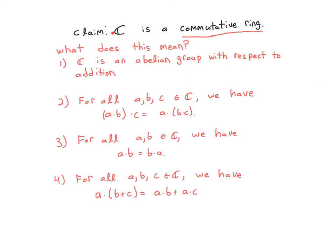So here's our claim: the complex numbers form a commutative ring. What does that mean? Well, it means that the complex numbers form an abelian group with respect to addition. Second, that multiplication is associative. The commutativity part says that multiplication is commutative. And finally, you have to have the distributive law. Note, we'll see in a later video that the other distributive law follows for free from commutativity.